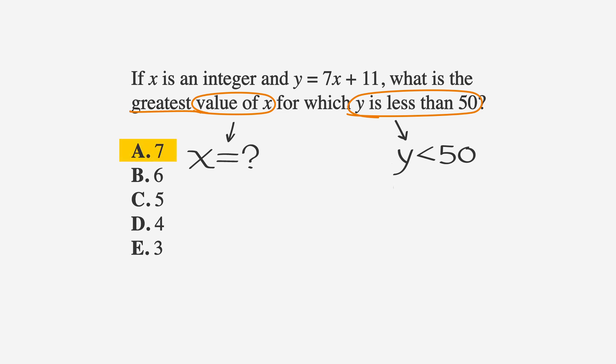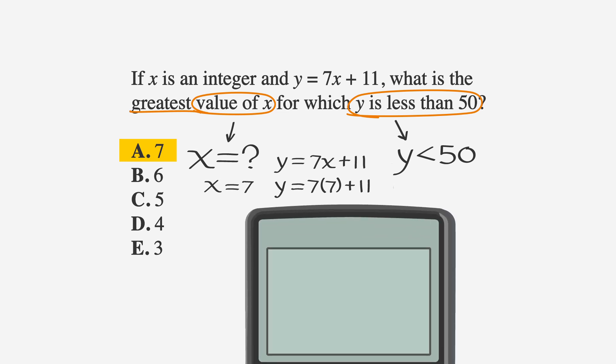To check A, we have to plug in x equals 7 to the expression 7 times x plus 11. If we do that, then that expression becomes 7 times 7 plus 11. Let's bring up our handy calculator and plug it in. So 7 times 7 plus 11. When you hit enter, you'll get 60.